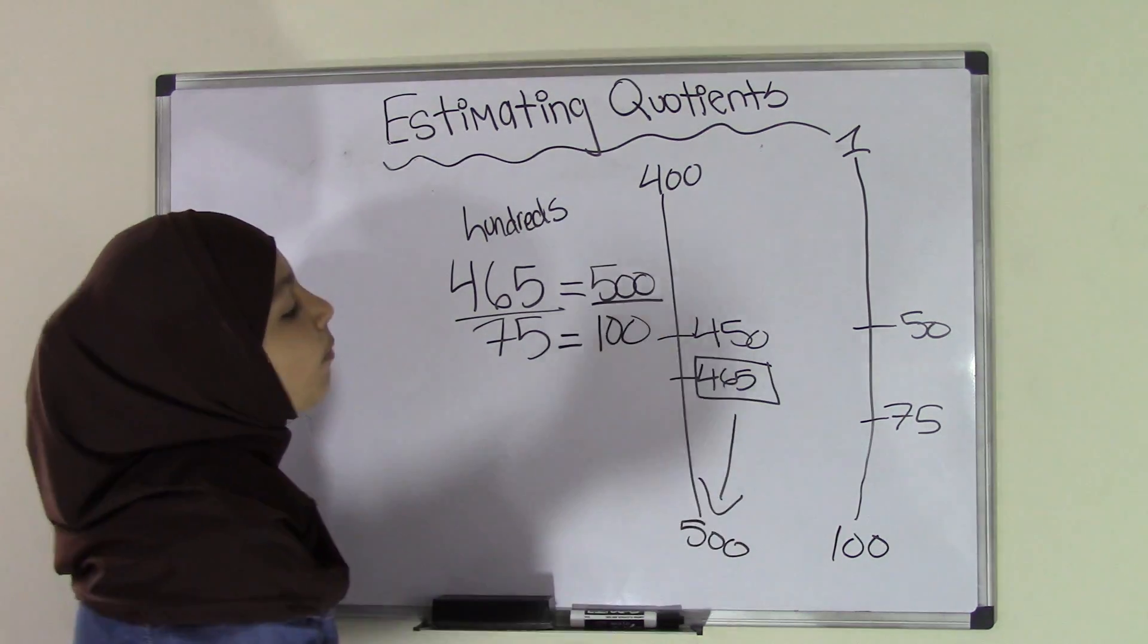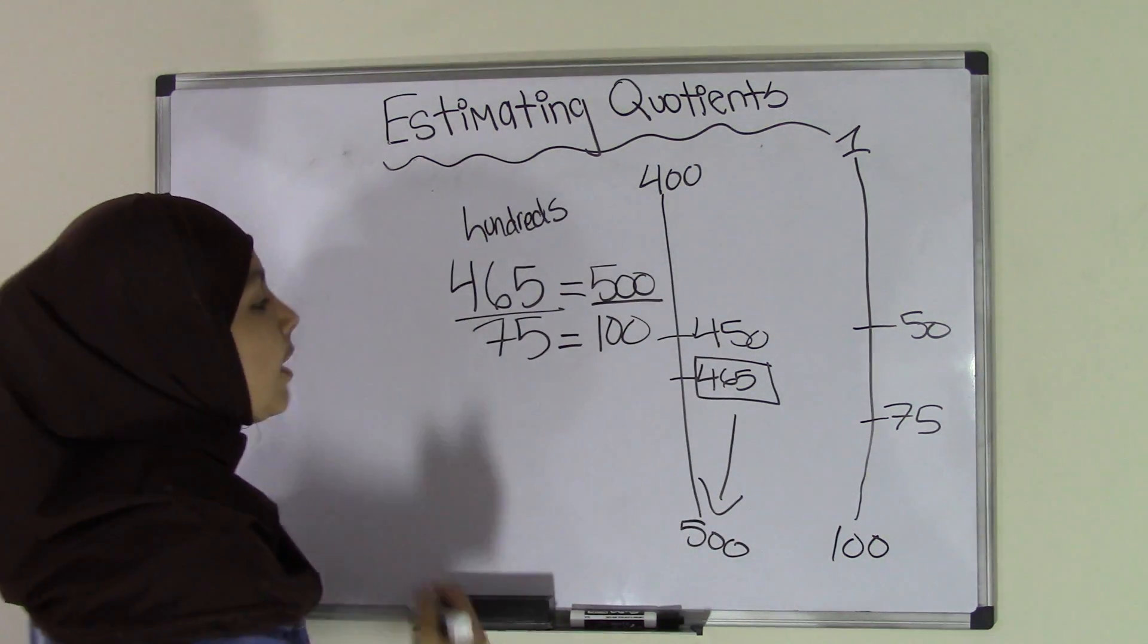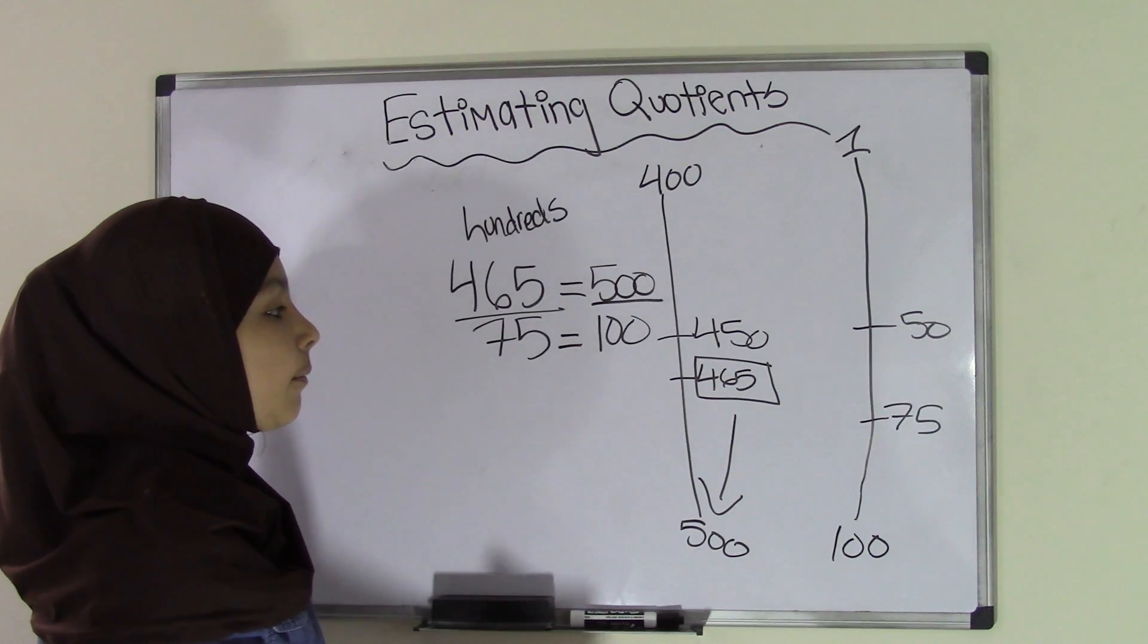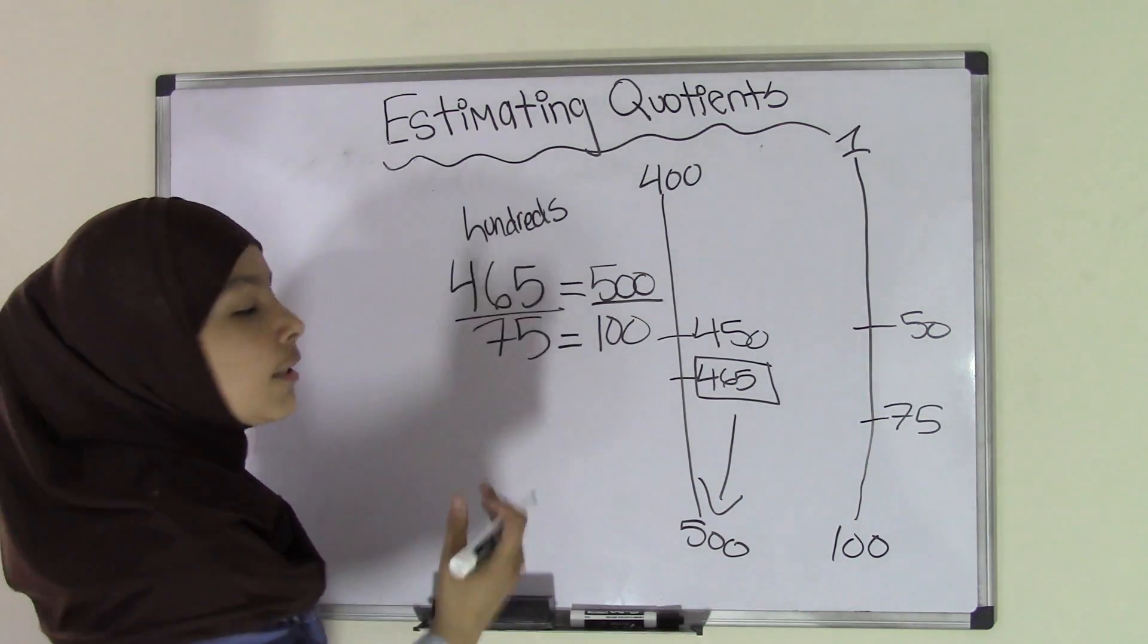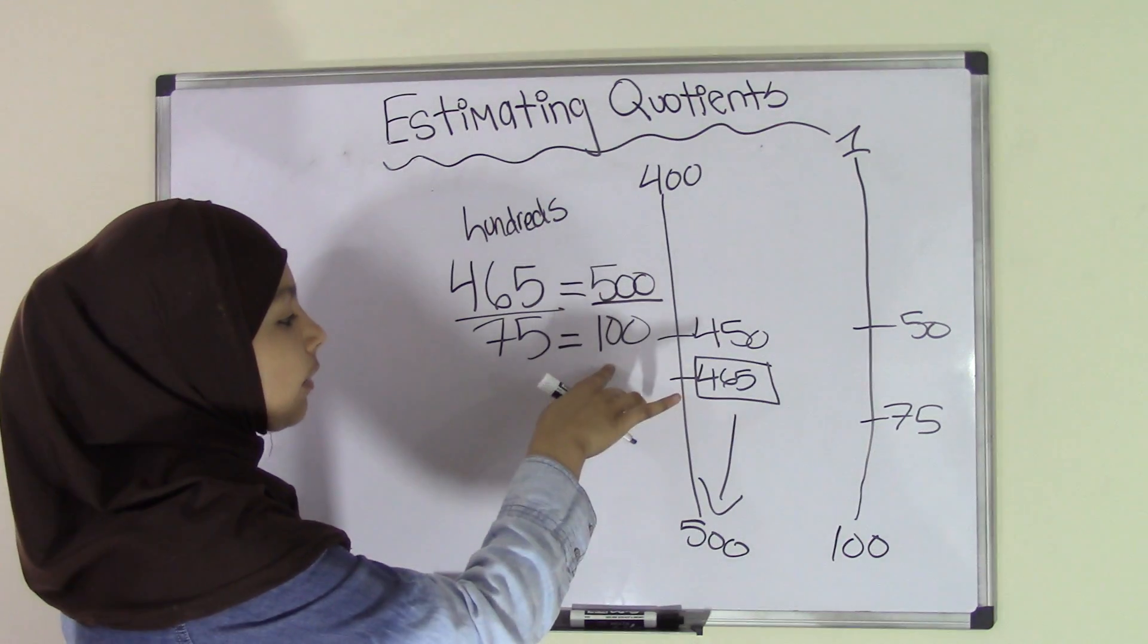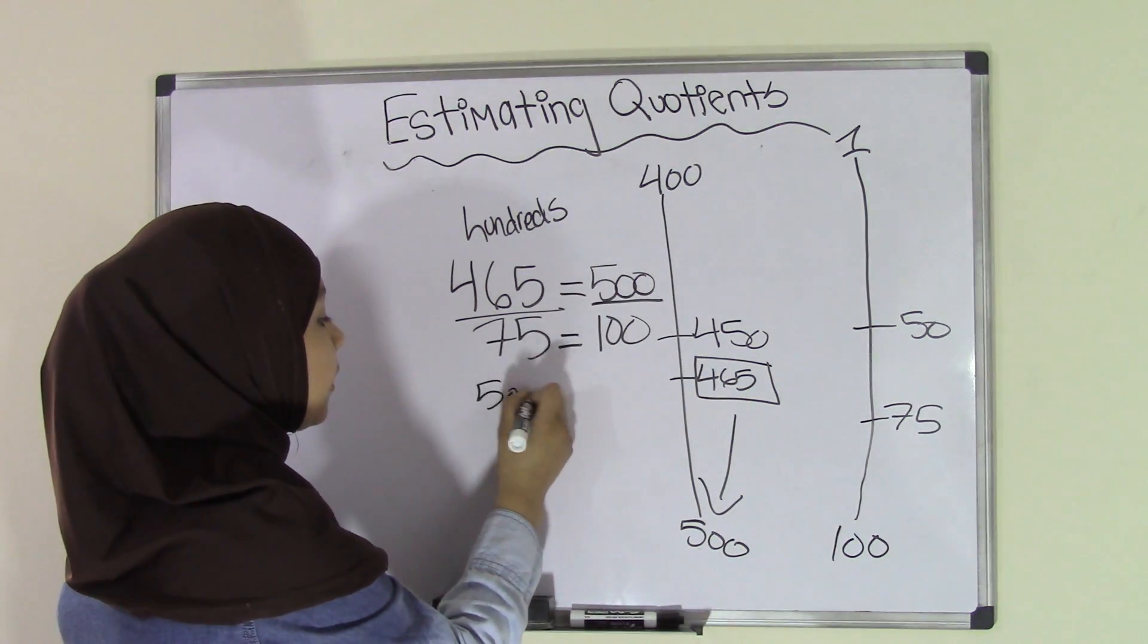Now, again, in our previous video, we also talked about hundreds, and that we can use our same formula. We can cancel out the zeros. So if we have 500 over 100 here, we'll remove one zero from here, and we're going to remove one from here, and the zero will go with the zeros.